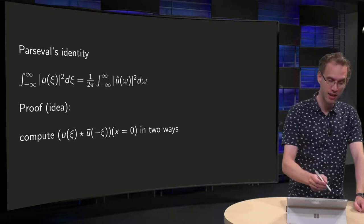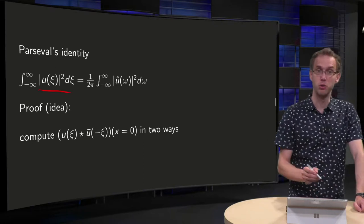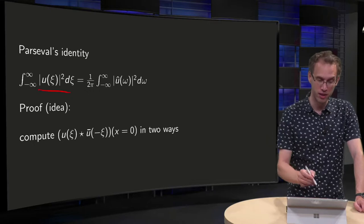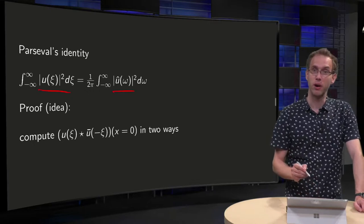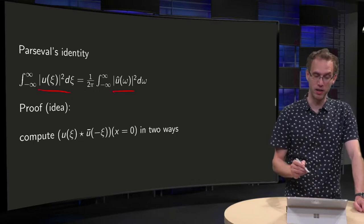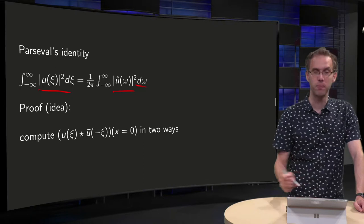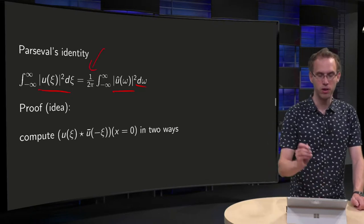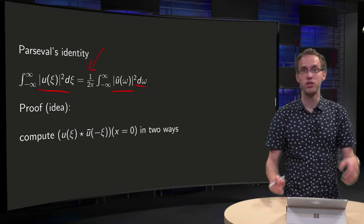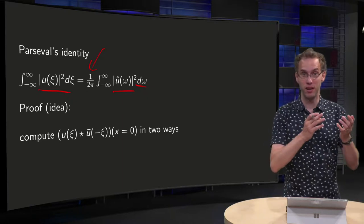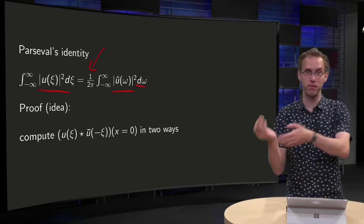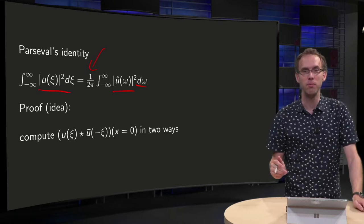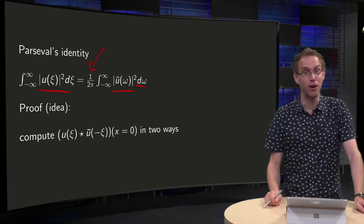So what does Parseval's identity say? The integral of |u|² with respect to ψ equals the integral of |û(ω)|² with respect to ω, up to this annoying factor of 2π. So energy in the time domain and the frequency domain are the same, up to this annoying factor.